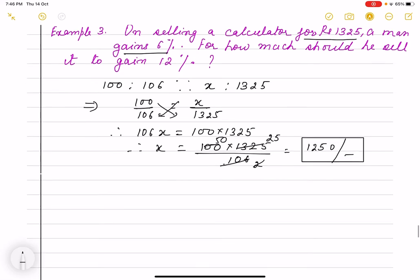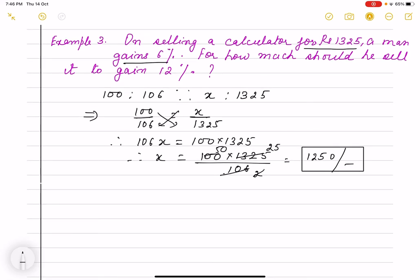But sometimes it happens that we want more profit. He got 6 percent profit, that means if I bought it for 100 rupees, then I will sell it for 106 rupees. But he wants profit more, how much? 12% profit. If I bought it at 100, then I need 112. So their CP is 1250, so cost price will be little more. If he wants more profit, then his SP will be more.